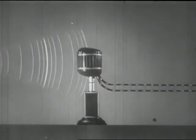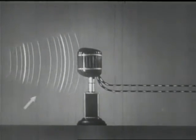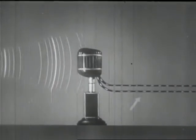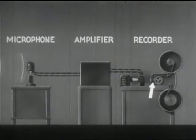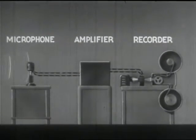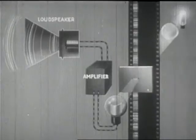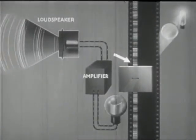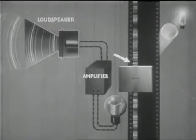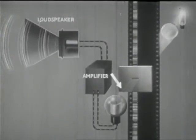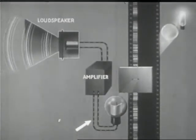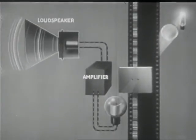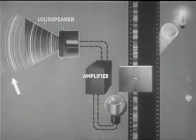To review: in the recording process, the original sound waves are converted to varying electrical current; the varying electrical current is converted to variations in a light beam; and the varying light beam produces a photographic sound record. In the reproducing process, the photographic sound record is used to produce a varying beam of light; the varying beam is converted into varying electrical current; and the varying electrical current is then converted back into sound waves.